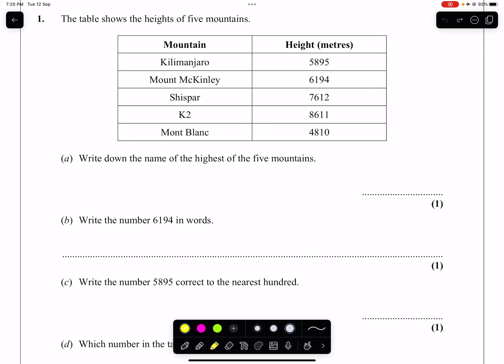Part A. Write down the name of the highest of the 5 mountains, that is, the mountain that has the biggest number. That is going to be 8,611 as the height, which means the mountain itself is K2.